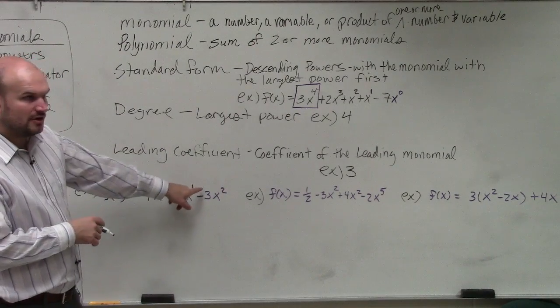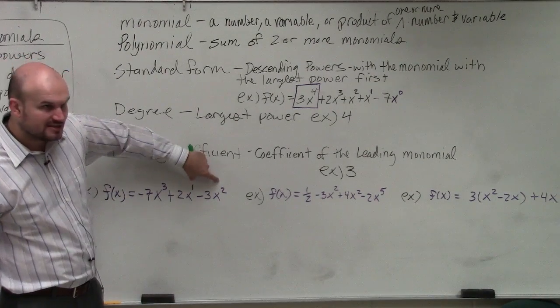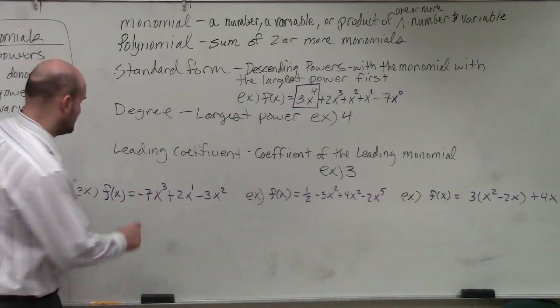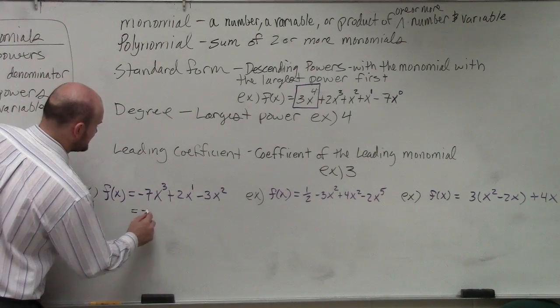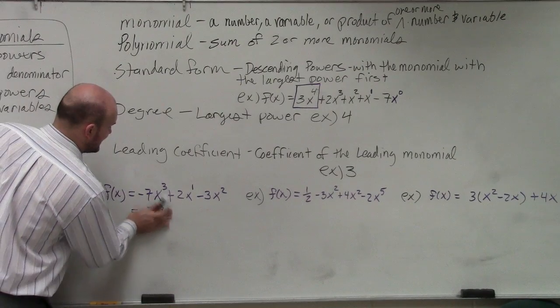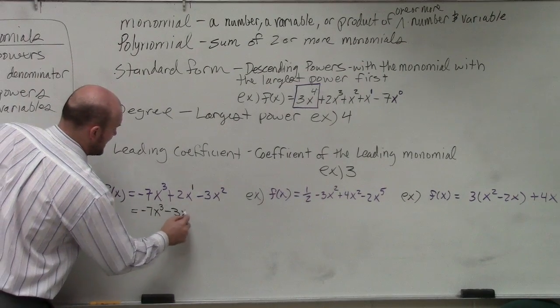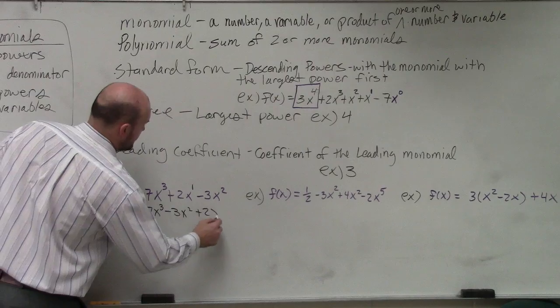So as you can notice, the only thing that needs to be switched is these two monomials. That's it. So my standard form is negative 7x cubed minus 3x squared plus 2x.